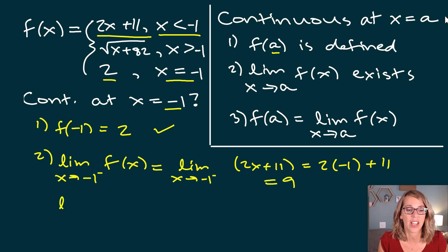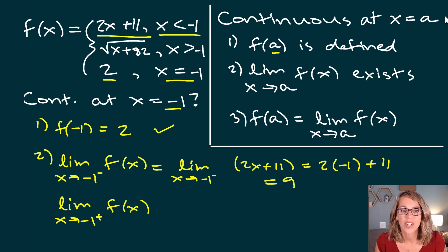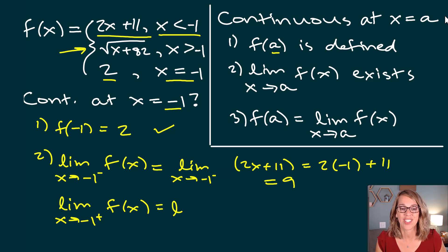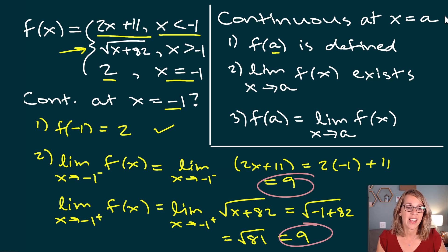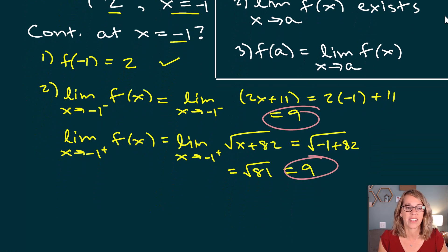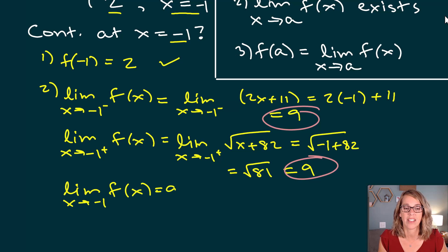We also need the limit from the right, and those need to be the same. Approaching negative one from the right uses the second piece of the definition, giving the limit as x approaches negative one from the right of the square root of x + 82. Plugging in gives the square root of (-1 + 82) = square root of 81, which equals nine. Both one-sided limits match, so the limit exists — condition two is satisfied.